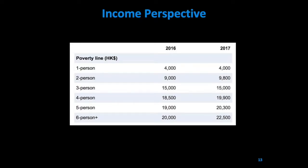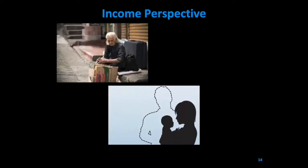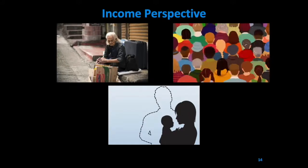This amount depends on how many people there are in a household. About one in five Hong Kongers live below the poverty line. Those who are most vulnerable often have lower incomes, such as older persons, single-parent families, and ethnic minorities.